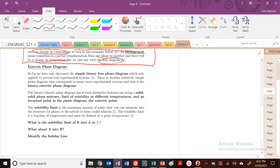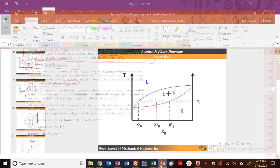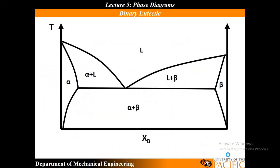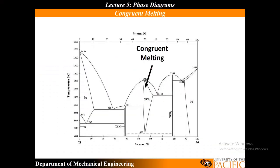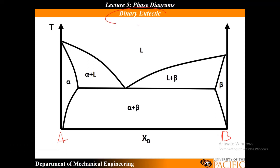Let's get into one of the more common phase diagrams you may encounter: a eutectic phase diagram. We've done the simple binary lens phase diagram, but one you'll commonly see is the binary eutectic phase diagram. It has a couple of interesting features. All the congruent melting points are on the sides here. This is A, this is B — our binary eutectic phase diagram.